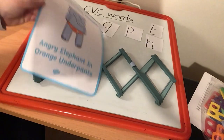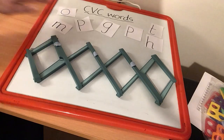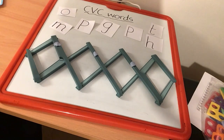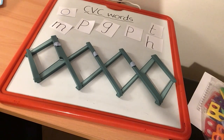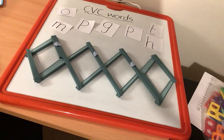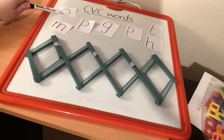Now, this week the focus is going to be on CVC words where letter O is the middle vowel. O is going to be the icky, sticky letter that sticks all the words together. So let's have a think. Where is letter O? Can you see it on my board? There it is. There's my letter O.